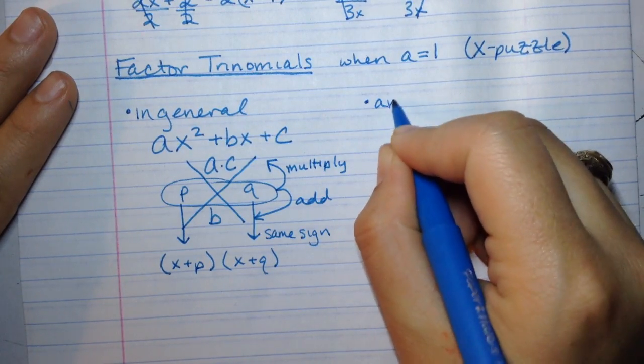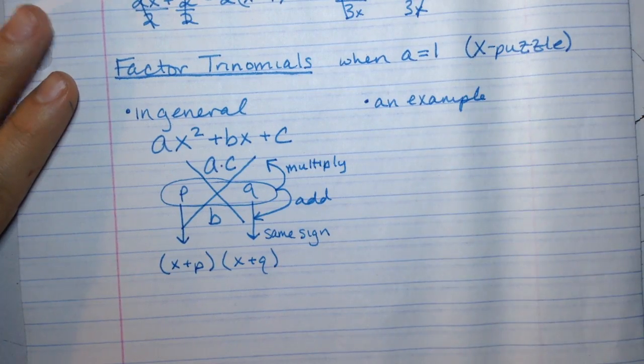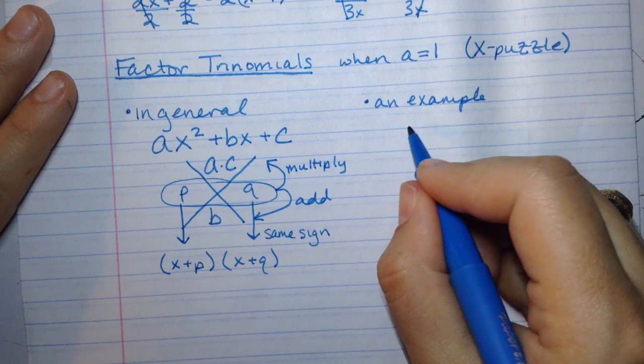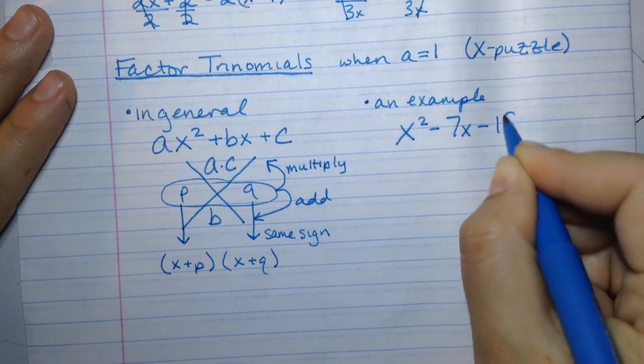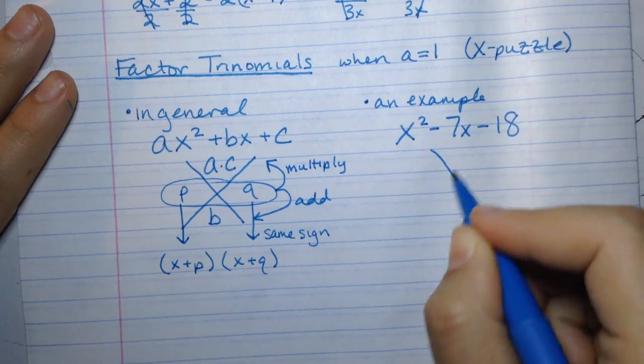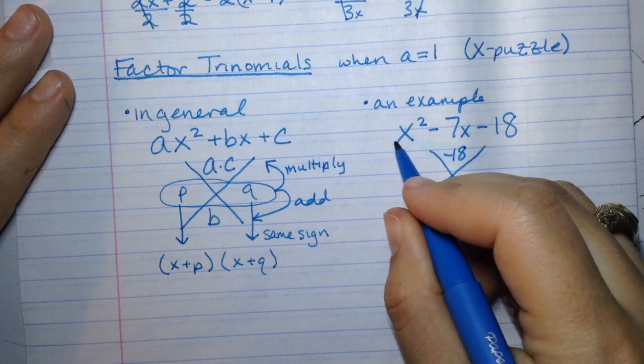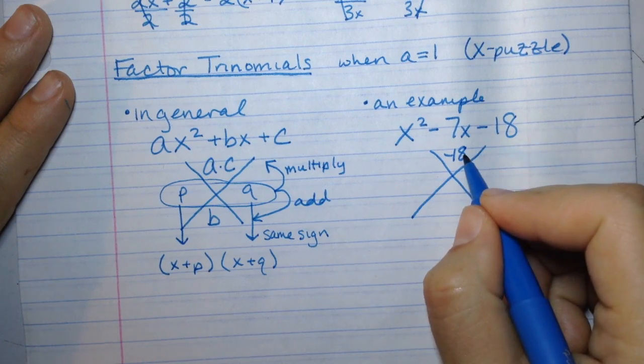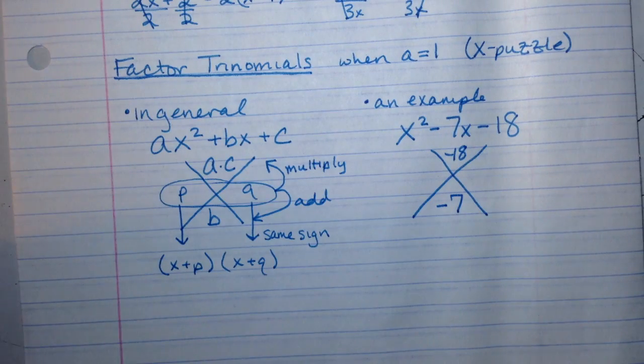So let's see an example. We'll use actual numbers instead of just letters that represent these numbers. Let's say we start with x squared minus 7x minus 18. We set this up, a times c. Well, a is 1, c is 18, so the top is negative 18. And negative 7 goes in the bottom. Well, I'm looking for numbers that multiply to 18 and add to 9.